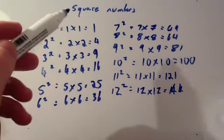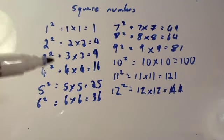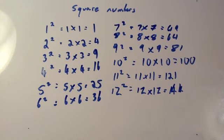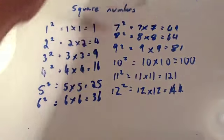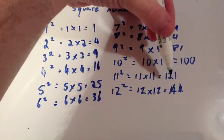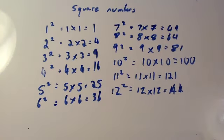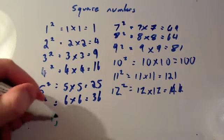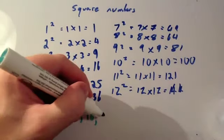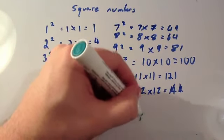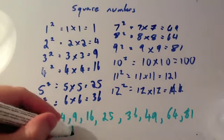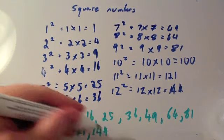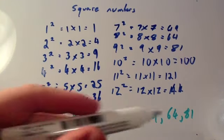So, the square numbers are the answers you get whenever you multiply the numbers by themselves — whenever you square every number. These numbers are: 1, 4, 9, 16, 25, 36, 49, 64, 81, 100, 121, 144. It's useful to know these square numbers off by heart, so I would strongly recommend learning them.